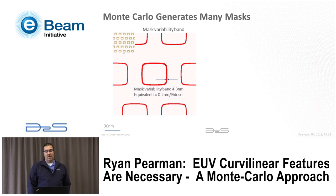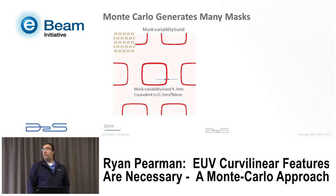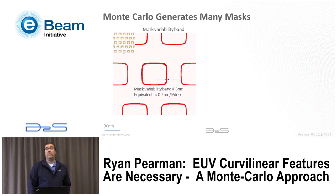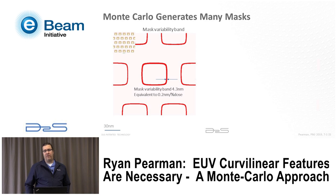For the rectilinear ILT solution printed using a VSB tool, the mask contours fall into a red band with about 4.3 nanometers of variation on the mask scale — essentially the XOR of all possible contours. That seems large, but this is roughly a six-sigma error based on the number of simulations performed. Using that six-sigma error, you can compute about 0.2 nanometers per percent dose margin, which is actually a pretty healthy process — we're not using a bad mask process to examine the effect on wafer.